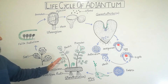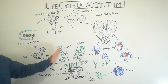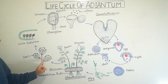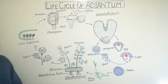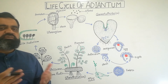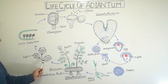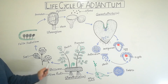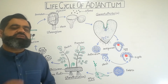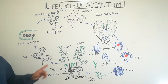Now looking at the pinnules in detail: the pinnules contain dichotomous venation. Dichotomous venation is a type of venation in which a single branch divides into two equal branches. As seen in the diagram, one branch divides into two, then each branch divides into two again, and this process continues. This is known as dichotomous venation.